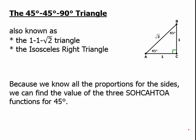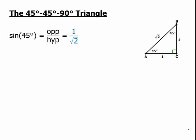Because we know all the proportions for the sides, we can find the value of the three SOHCAHTOA functions for 45 degrees. Sine, of course, is opposite over hypotenuse. So starting at either 45-degree angle, the opposite is 1 and the hypotenuse is √2. We have to rationalize this fraction, which means we're going to multiply by √2 over √2, and that will give us √2 over 2. That is the rationalized form of the reciprocal of √2, and that is the sine of 45 degrees.